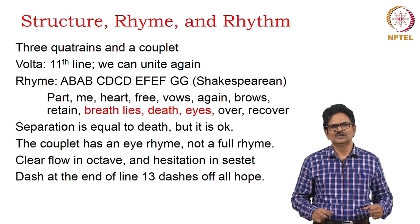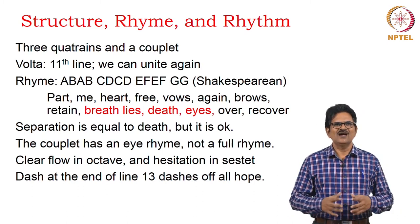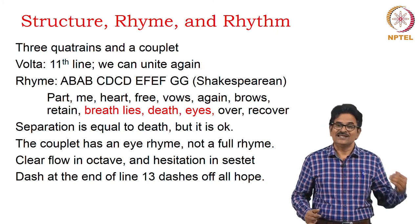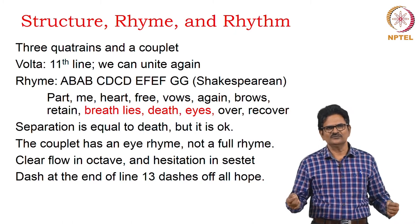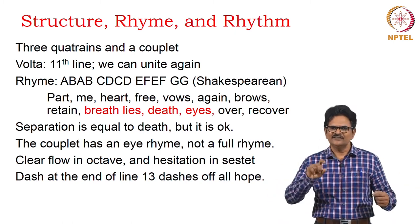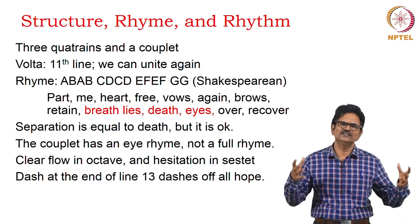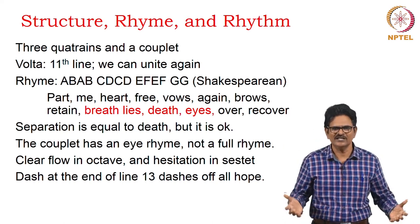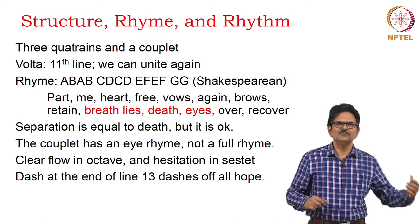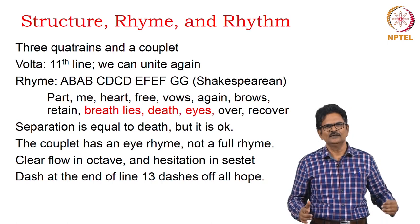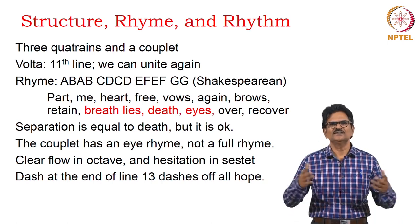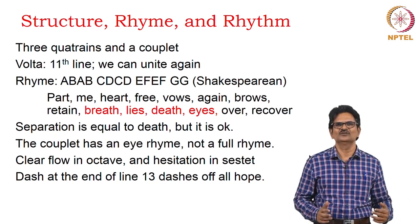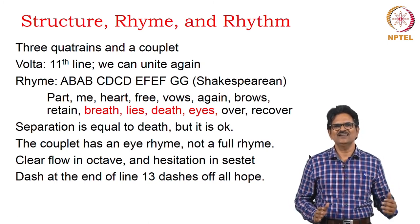The structure, rhyme, and rhythm: again, we have three quatrains and a couplet. The volta in this case is found in the eleventh line, where there is a hint that we can unite again — a change in the thought process. At the beginning we have the whole thought of separation, but at the end there is an element of union as well. The rhyme scheme is A B A B, C D C D, E F E F, and G G — this is a Shakespearean sonnet structure. The rhyming words are: part, me, heart, free; vows, again, brows, retain; breath, lies, death, eyes; over, recover.